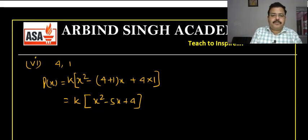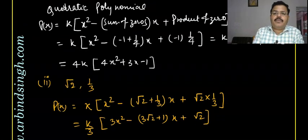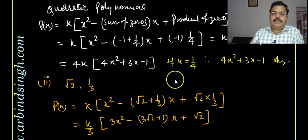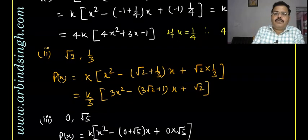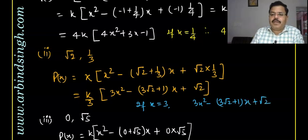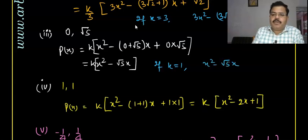In all these questions, you can see that k is an arbitrary constant. If I put k = 1/4 in the first question, then 4k becomes 1 and the polynomial is 4x² + 3x - 1. Similarly, if I put k = 3 for the second question, the polynomial becomes 3x² - (3√2 + 1)x + √2. You can take k according to your convenience; there will be a number of polynomials possible.